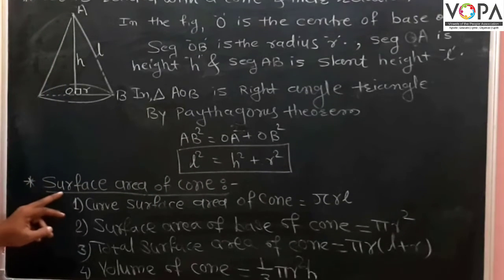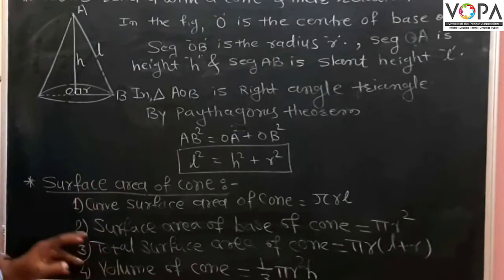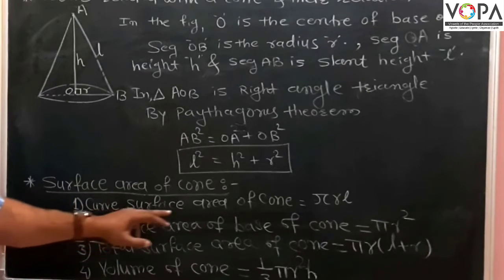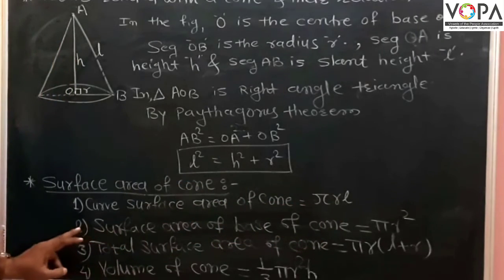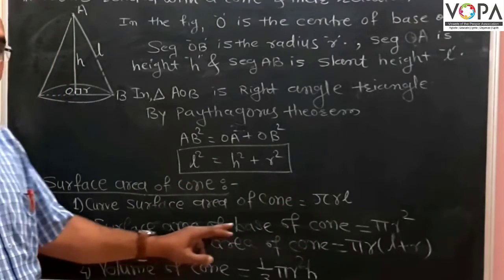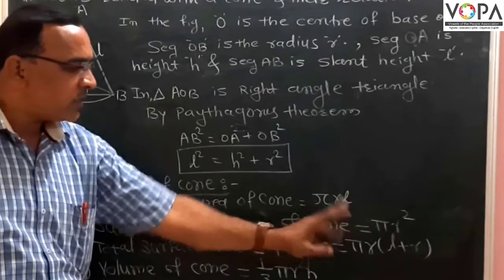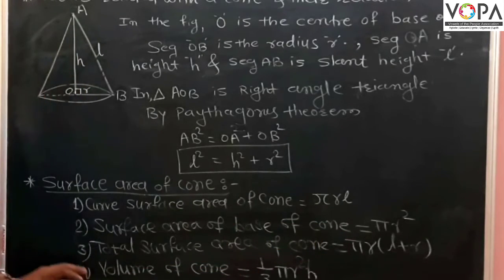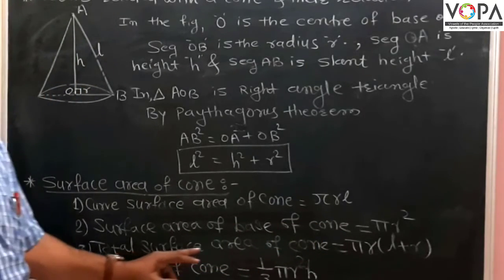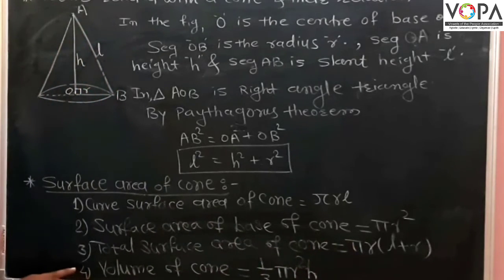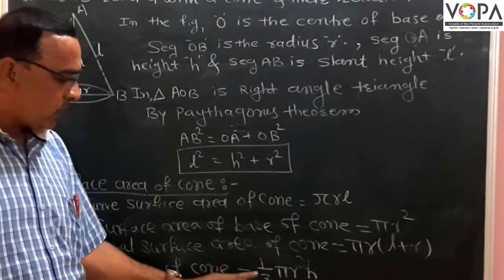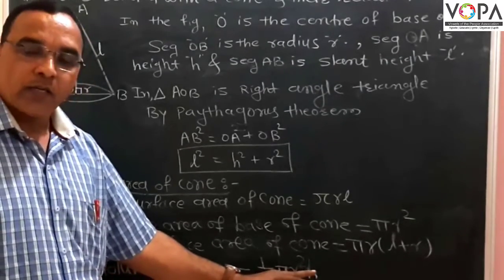We will learn some formulae of the surface area of a cone. First, the curved surface area of a cone equals πRL. Second, the surface area of the base of the cone is πR². Third, the total surface area of the cone is πR(L + R). Fourth, the volume of the cone is equal to one-third πR²S.